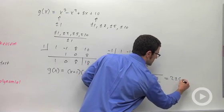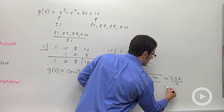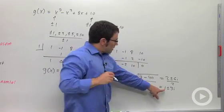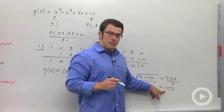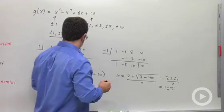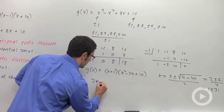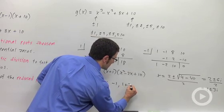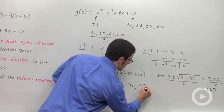So 2 plus or minus 6i over 2, which is 1 plus or minus 3i. And that represents two zeros, two imaginary zeros for our polynomial. And so the zeros are negative 1, 1 plus 3i, and 1 minus 3i.